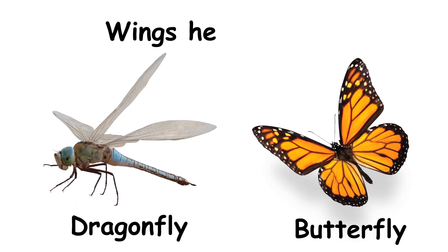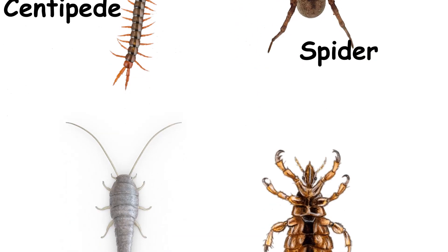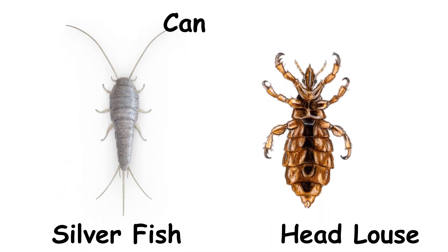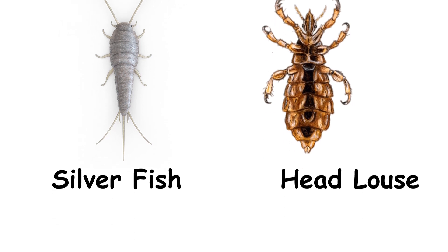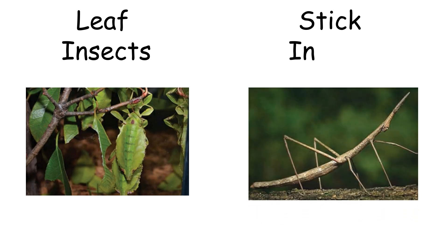Some insects have wings that help them fly. Some insects have more than six legs. Some insects cannot fly. Some insects look like leaves and some look like sticks.